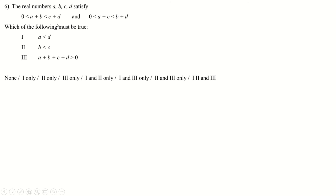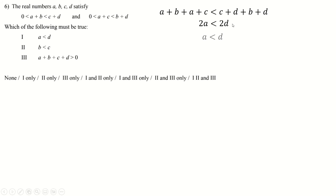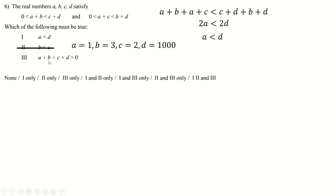Question 6 is similar to something we've seen before. A nice approach: ignore the 'greater than zero' bit for now and just add the two inequalities together. You get 2a + b + c < 2d + b + c. Cancel b and c, divide by 2, and a < d — so statement 1 must be true. For statement 2, a counter-example where d is really big shows b doesn't have to be less than c. Statement 3 is true by logic: if a + b > 0 and c + d > a + b, the total is positive.